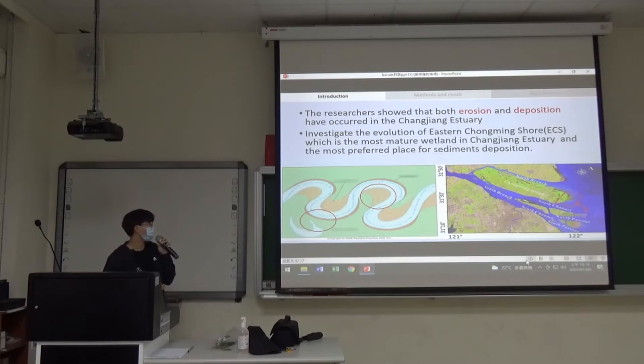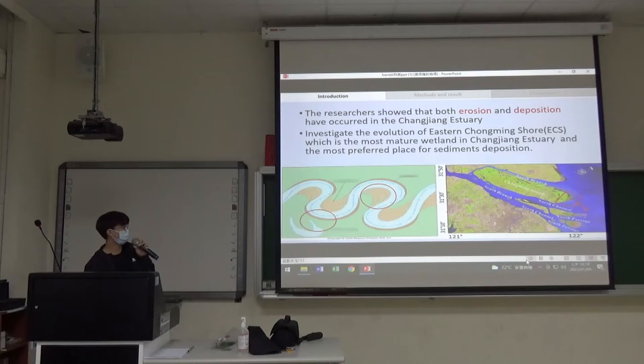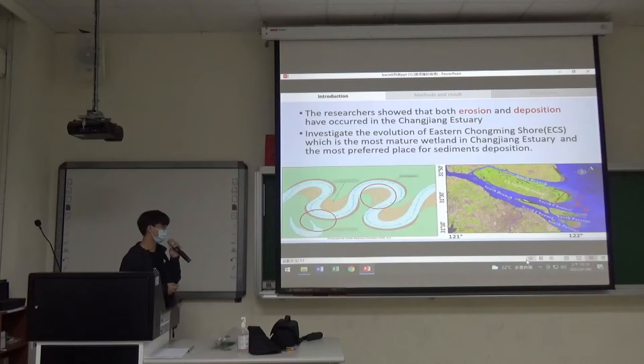So the research investigated the evolution of Eastern Chongming Shore, which I will refer to as ECS in my presentation. This is the more mature wetland in Changjiang Estuary and the most preferred place for sediment deposition. This is a picture of ECS, and this is the entire Changjiang Delta.